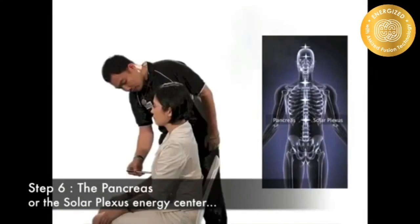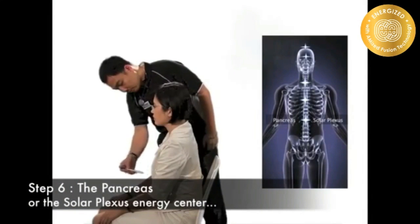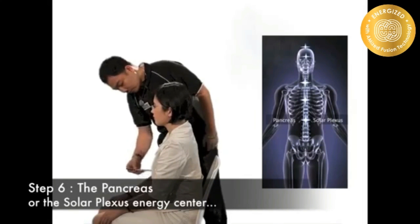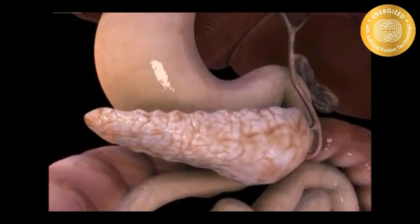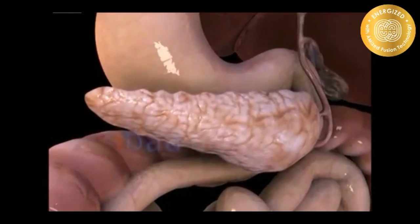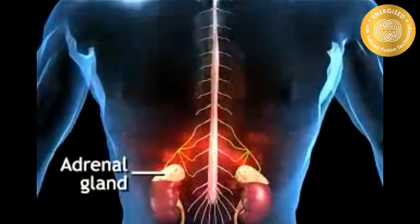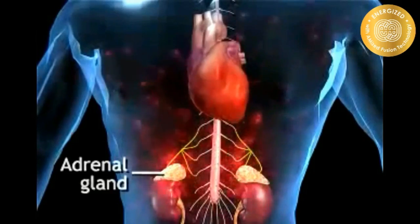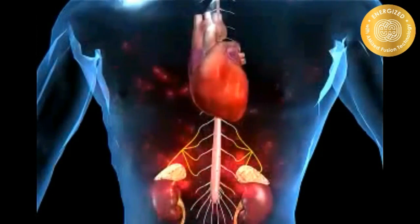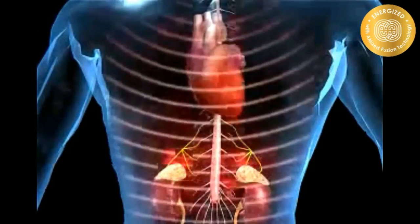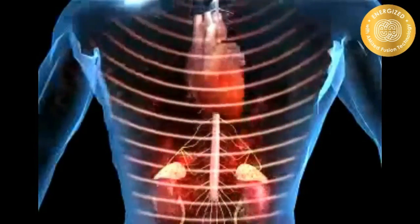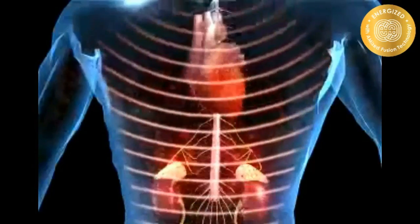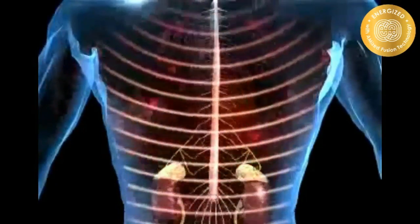Step 6: The pancreas, or the solar plexus energy center. The pancreas is a glandular organ which serves as two glands in one — a digestive exocrine gland and a hormone-producing endocrine gland. As an exocrine gland, the pancreas excretes enzymes to break down proteins, lipids, carbohydrates and nucleic acid in food. As an endocrine gland, the pancreas secretes hormones, insulin and glucagon, to control blood sugar levels throughout the day.